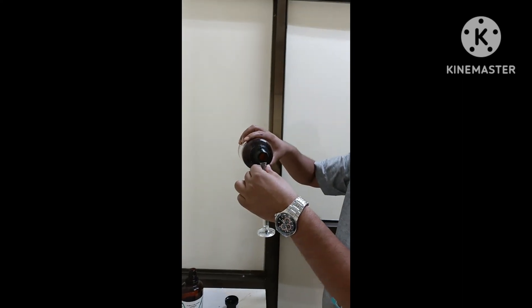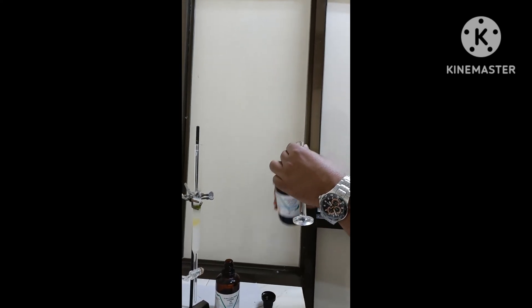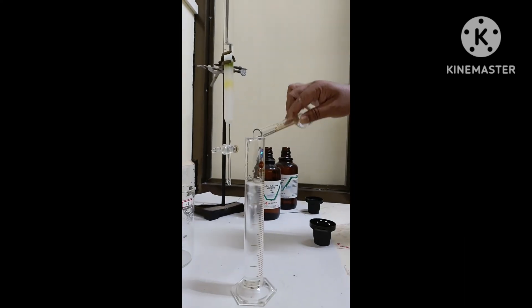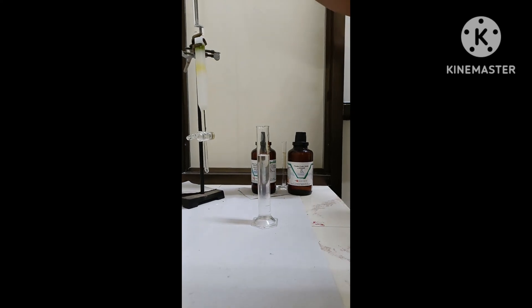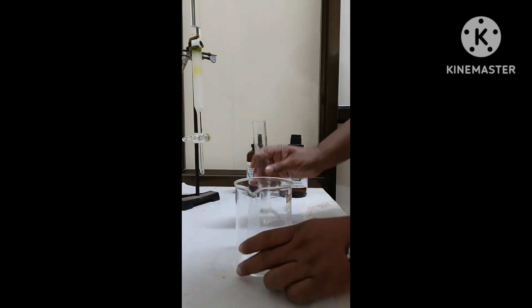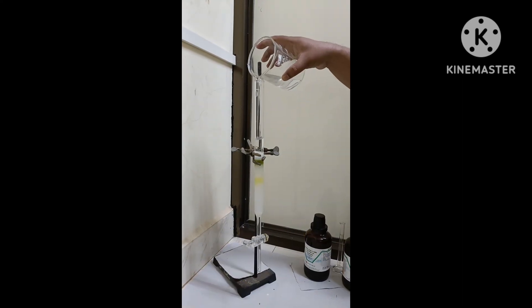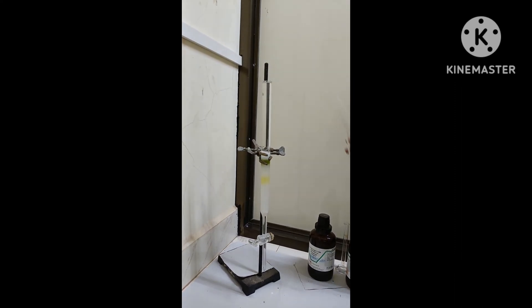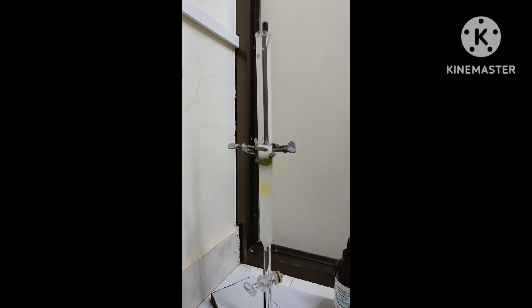As we are eluting with the n-hexane only, now we can add a little amount of acetone. I added 10 ml of acetone in 90 ml of n-hexane, so we are increasing the polarity and then it will move faster. Once you collect the beta carotene in the test tube, then again you can increase the polarity so that the chlorophyll pigments can elute out from the column. This is how you can separate the beta carotene and chlorophyll pigments using simple column chromatography.